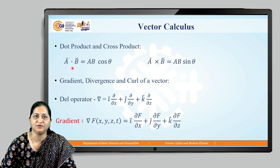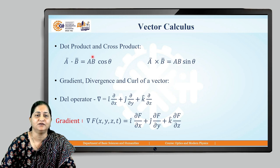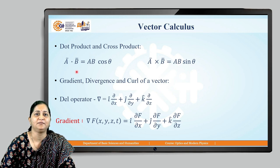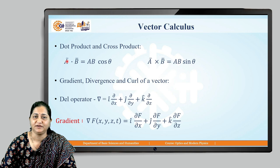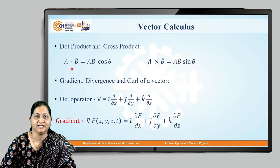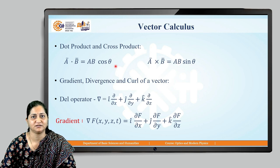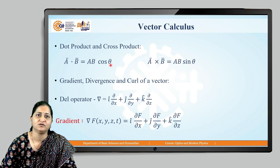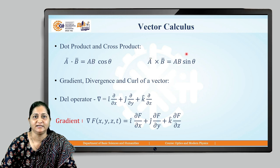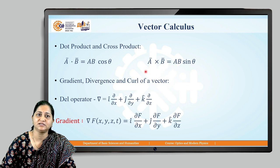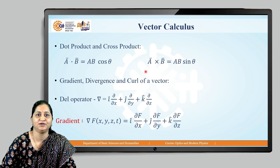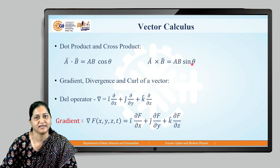When we take the dot product of two vectors A and B, we find out how much they are parallel to each other. The dot product gives A·B = AB cosθ. If the two vectors are parallel, theta becomes 0, cosθ equals 1, and we get the maximum value AB. When we take the cross product A×B, we find how much the two vectors are perpendicular to each other, since A×B = AB sinθ.